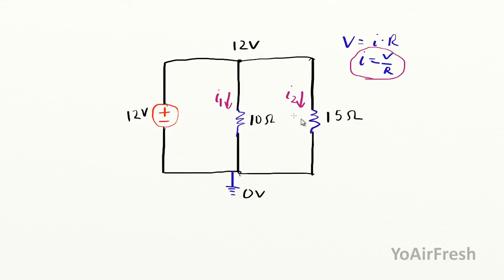For I sub 1, I'll use a different color here—how about green? I'll do it down here. For I sub 1, we got the 12 volts minus the zero volts here on the bottom. Obviously that's 12, but I'm just putting it there because sometimes it's not zero. That's going to be over the 10 ohms. So that equals six over five amps.